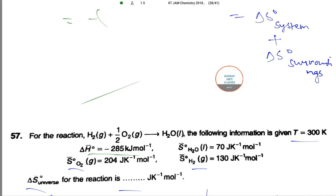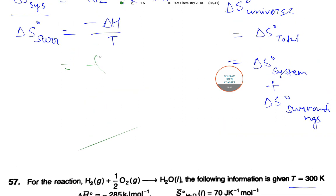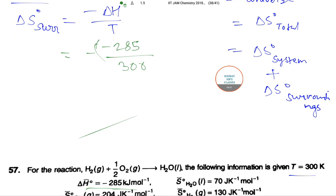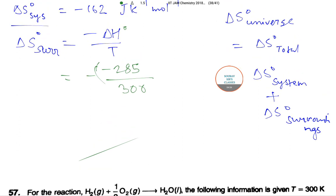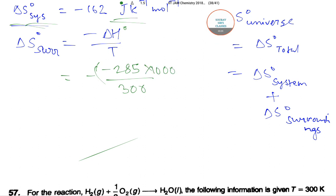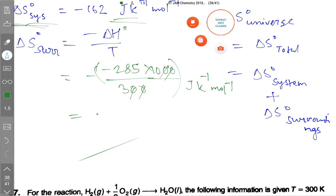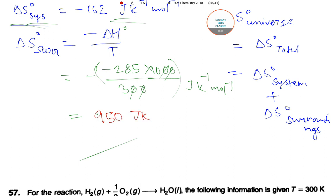So this will be equal to minus 285 divided by 300, and the value has been given in kilojoules per mole. So we will convert in joules per mole because we have found out ΔS° for system in joules per Kelvin per mole, so it will be better for us if we convert it here itself. So this will be in joules per Kelvin per mole, and this value will come out as 950 joules per Kelvin per mole.